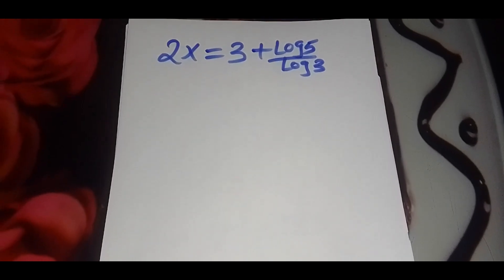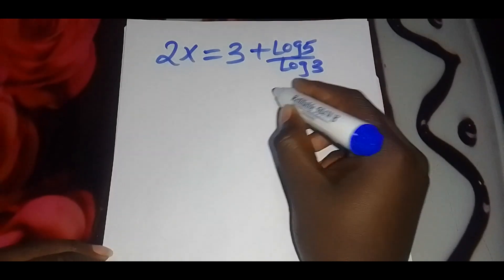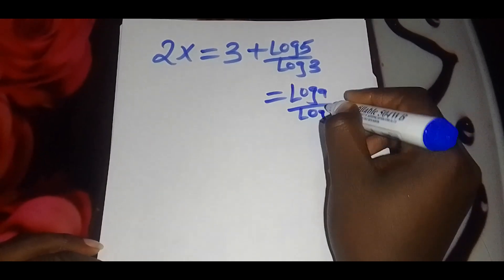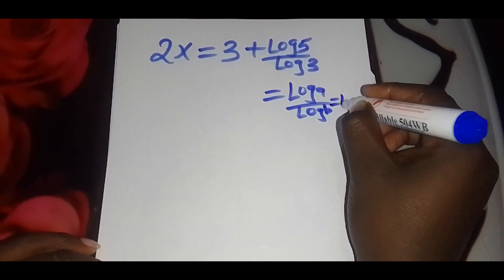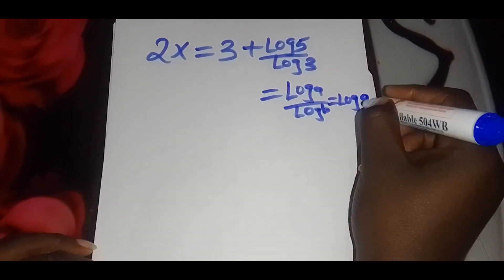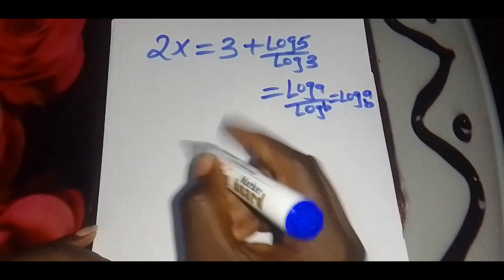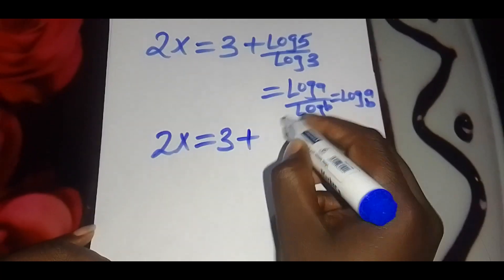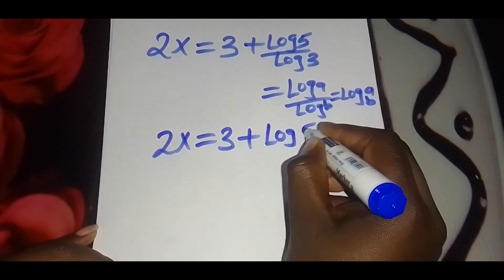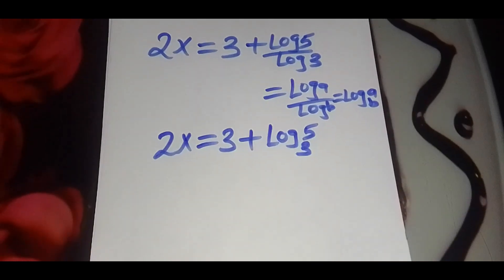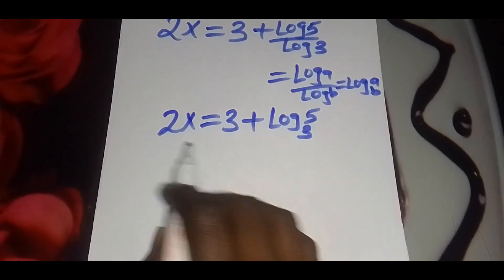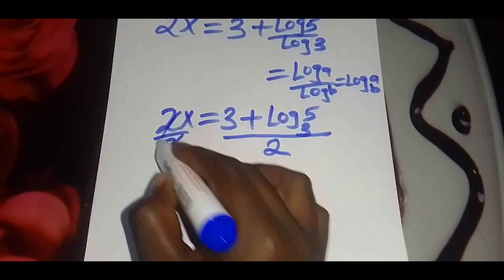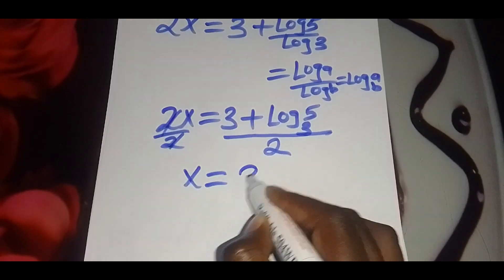This is equal to 3 plus log 5 divided by log 3. Introducing the change-of-base property — if you have log a divided by log b, this can be expressed as log of a to base b — so now we have 2x equals 3 plus log 5 to base 3.